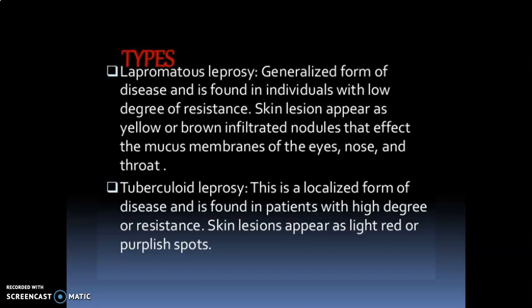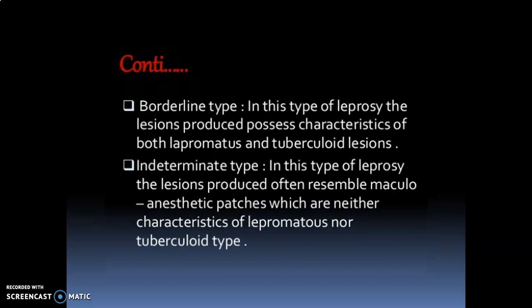Second is Tuberculoid Leprosy. This is a localized form of disease and is found in patients with a high degree of resistance. Skin lesions appear as light hypopigmented spots. Next is Borderline type. In this type of Leprosy, the lesions possess characteristics of both Lepromatous and Tuberculoid lesions.